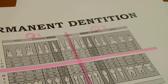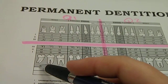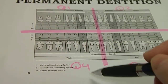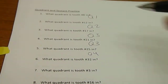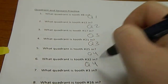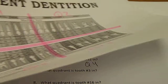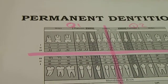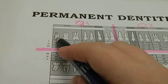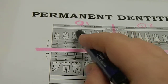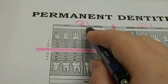What quadrant is tooth number 32? Tooth 32 is the very last one on the right-hand side — again, quadrant four. It's our third molar. What quadrant is tooth number three? Tooth three is on the maxillary arch: one, two, three — here's our first maxillary right molar — it's quadrant number one.